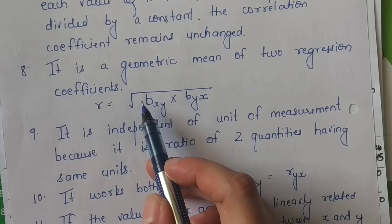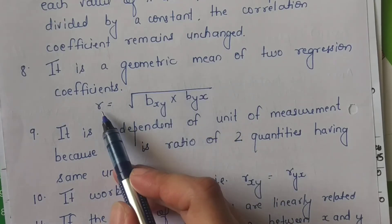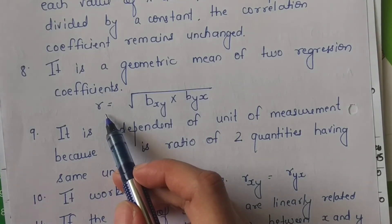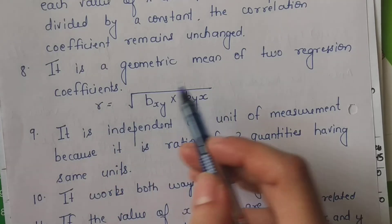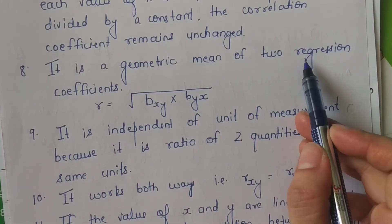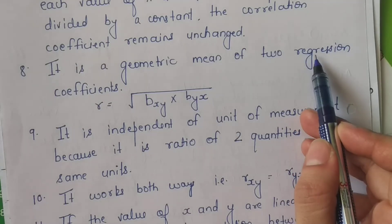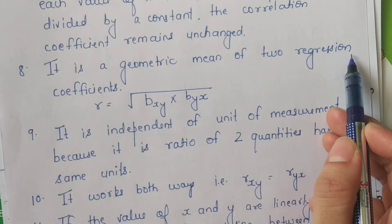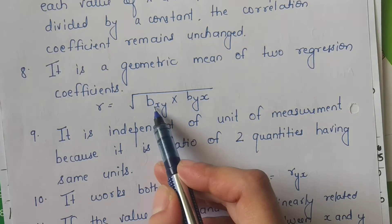Then baat aati hai geometric mean ke baare mein. Yeh jo correlation coefficient hai r hai, isko aap dusre tarike se bhi dekh sakte. Mere aage aane wali videos ki baare mein, abhi toh main correlation discuss kar raha hoon. Main next unit jo ga, I'll be talking about the unit of regression.